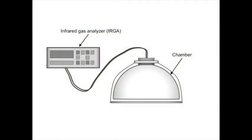The closed dynamic system that we are using today is just one way to measure soil CO2 efflux. In a closed system, CO2-free air is circulated from an infrared gas analyzer, or IRGA, to the chamber where it mixes with CO2 coming from the soil and then is circulated back to the IRGA for measurement. The flux is estimated using the rate of the CO2 concentration increase inside the chamber during a short period of time.